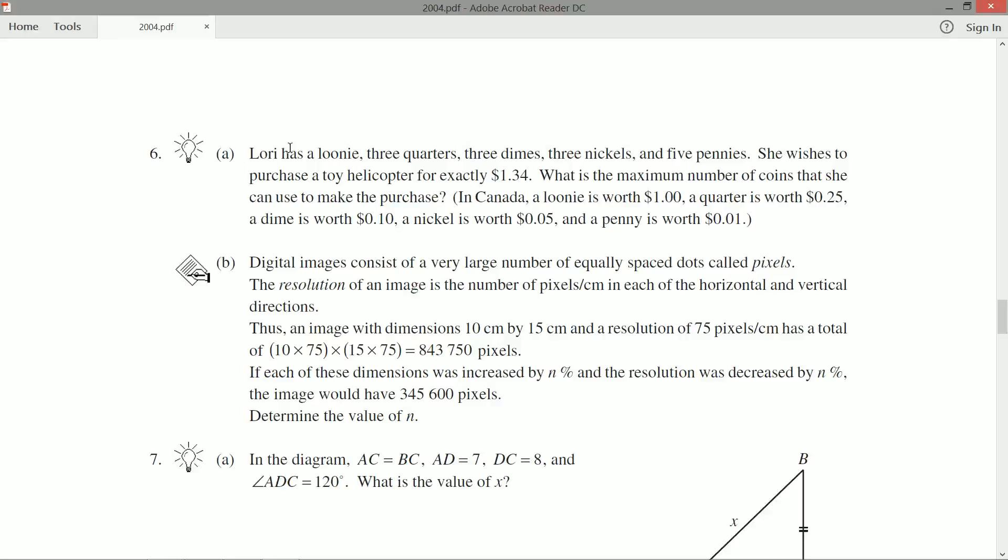We just need our final answer. Lori has a loonie, three quarters, three dimes, three nickels, and five pennies. She wishes to purchase a toy helicopter for exactly $1.34. What is the maximum number of coins that she can use to make this purchase?